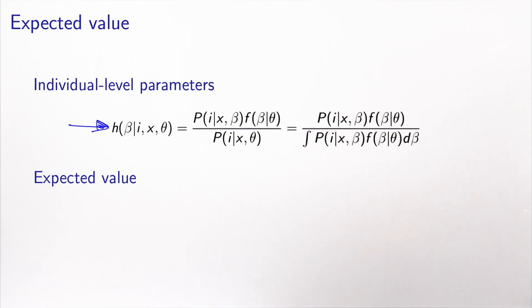So we may want to calculate the average value of this density function. So let's do that. Let's calculate the mean, which would be the integral over beta of beta times h of beta conditional to i, x, and theta.